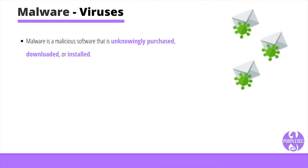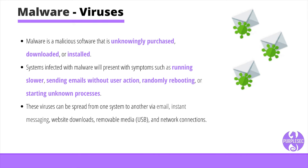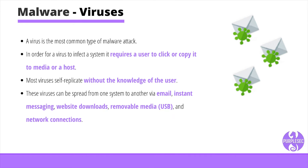A virus is the most common type of malware attack. In order for a virus to infect a system, it requires a user to click or copy it to media or a host. Most viruses self-replicate without the knowledge of the user. These viruses can spread from one system to another via email, instant messaging, website downloads, removable media like USBs, and network connections. Some file types are more susceptible to virus infections, like documents, executables, Excel sheets, zip files, and others. Viruses typically remain dormant until they have spread onto a network or a number of devices before delivering the payload.